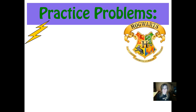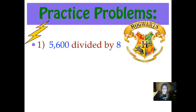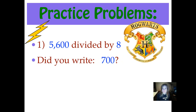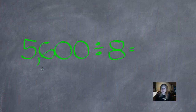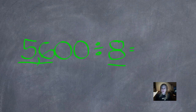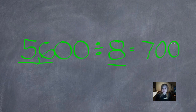Let's do our first practice problem: 5,600 divided by 8. Remember, you can always go back and look at your notes for the example problem. Underline those non-zero digits, perform your simple division problem, and then add the zeros back to it. Did you write 700? We'll underline our non-zero digits: 56 in this number and 8 in this number. 56 divided by 8 is 7, because 7 times 8 is 56. Now we just count our zeros — 1, 2 — and add those two zeros after our 7: 700.